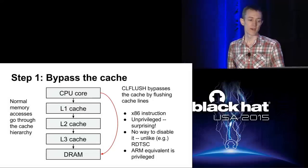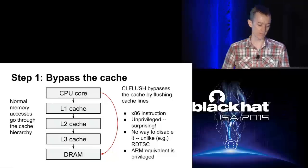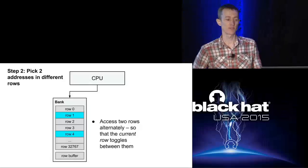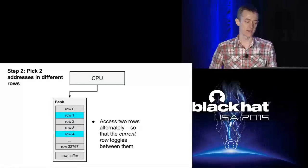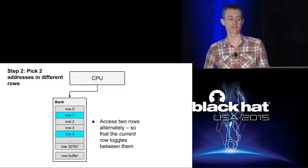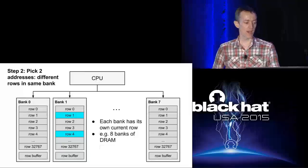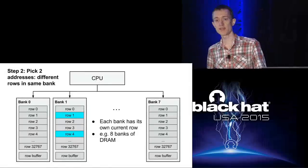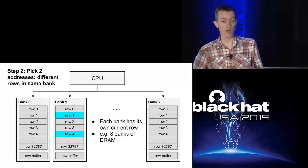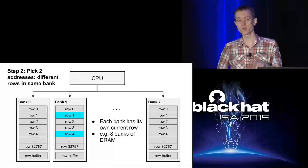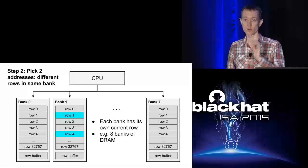This is slightly surprising because on other architectures like ARM, the equivalent cache flush instruction is actually privileged. However, if you do a CLFLUSH access to a single address, that by itself is not going to do row hammering, because those accesses will all go to the same row. The second requirement for doing row hammering is to pick at least two addresses in different rows and access them alternately - that forces changes to the current row. There is another requirement too: the two addresses must be in the same bank. DRAM modules are divided into banks, and each bank has its own independent current row.